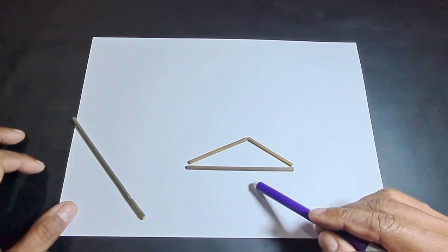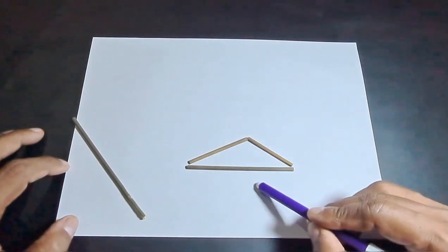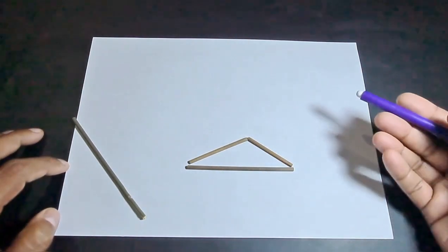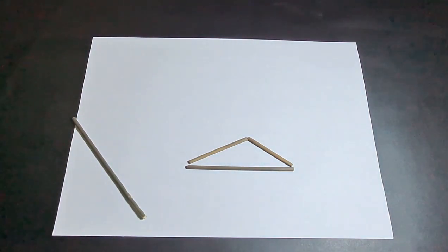But if it is less than the third side, the triangle cannot be formed and that completes our activity on checking whether a triangle can be formed or not.